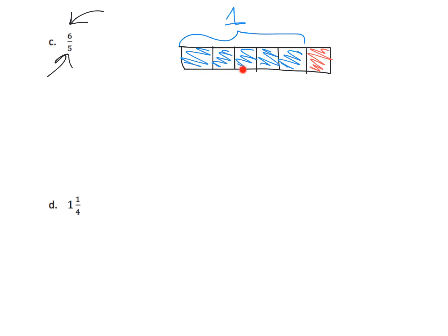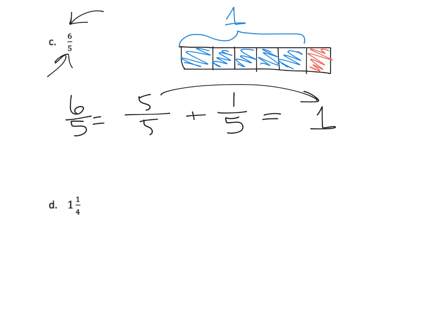Those five pieces represent the one whole, plus we have that extra fifth — so that's our six-fifths. We want students to not just rote-memorize 'if the numerator is bigger than the denominator it's more than one,' but to understand why. Six-fifths can be written most importantly as five-fifths plus one-fifth, showing that it equals one and one-fifth — foreshadowing how to convert an improper fraction to a mixed number.